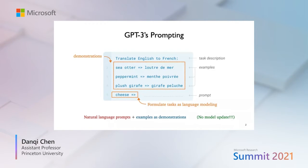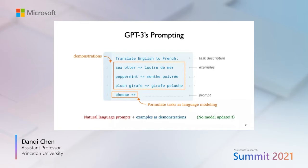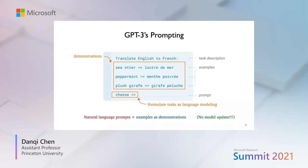In this example, the task description is "translate English to French," the examples are several pairs of English and French phrases, and the expected output is the French translation of the English word "cheese." This is a very appealing paradigm because it doesn't require any gradient descent or model update — all you need to do is construct this prompt to query the model.